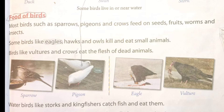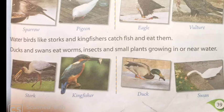Food of birds: most birds such as sparrows, pigeons and crows feed on seeds, fruits, worms and insects. Some birds like eagles, hawks and owls kill and eat small animals. Birds like vultures and crows eat the flesh of dead animals. Water birds like storks and kingfishers catch fish and eat them. Ducks and swans eat worms, insects and small plants growing in or near water.